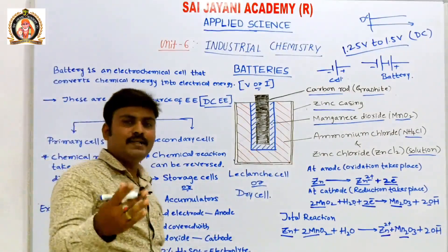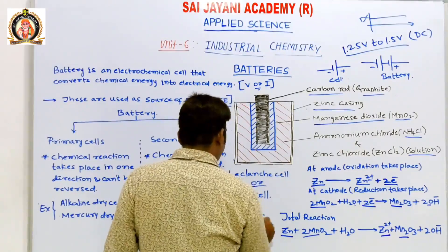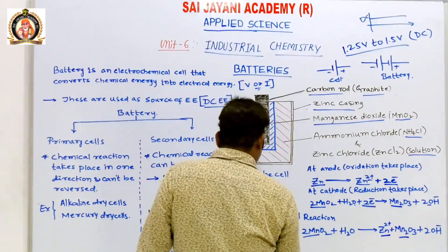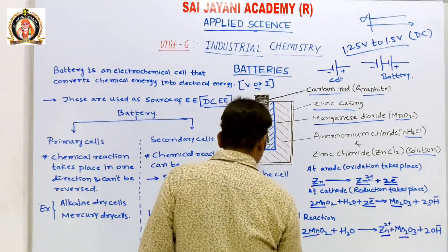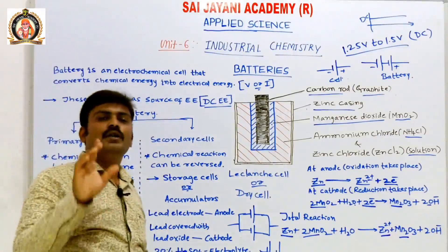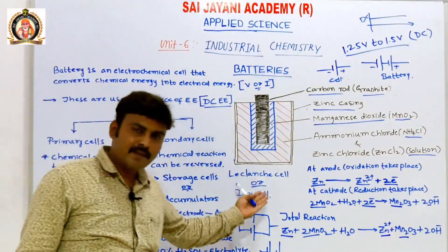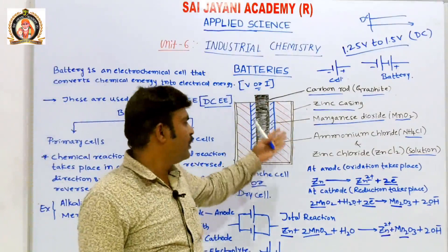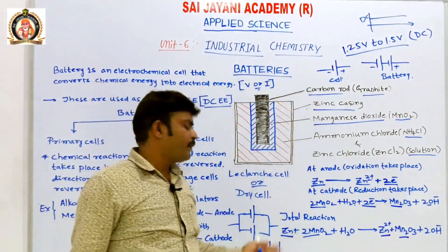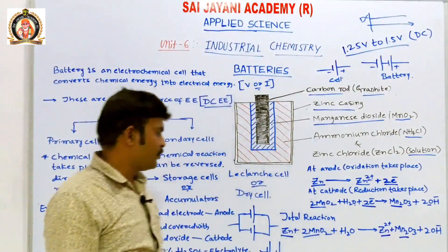If you want more current, the cells should be connected in parallel. If you want more voltage, the cells should be connected in series. This is about primary cells — cells where the chemical reaction takes place in only one direction, meaning discharge only. They cannot be recharged. The best example is the Leclanché cell.